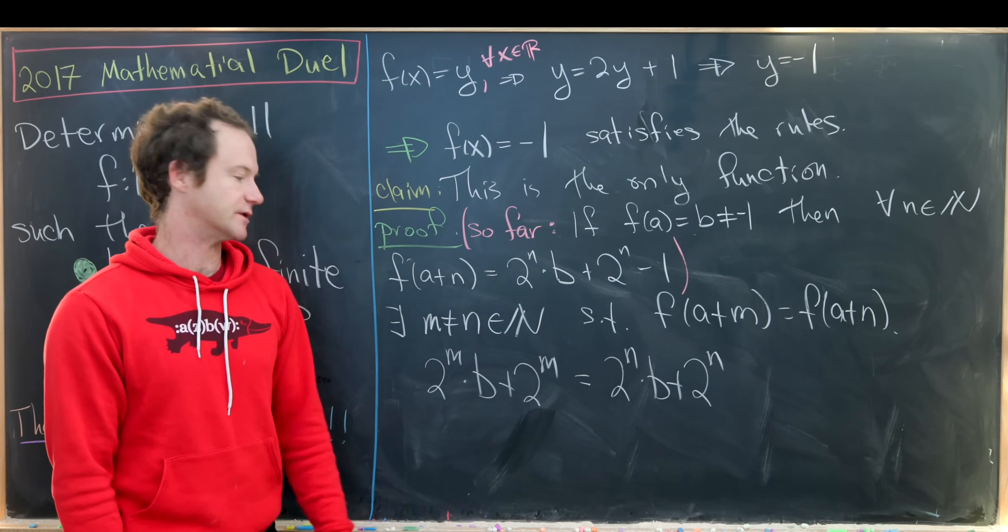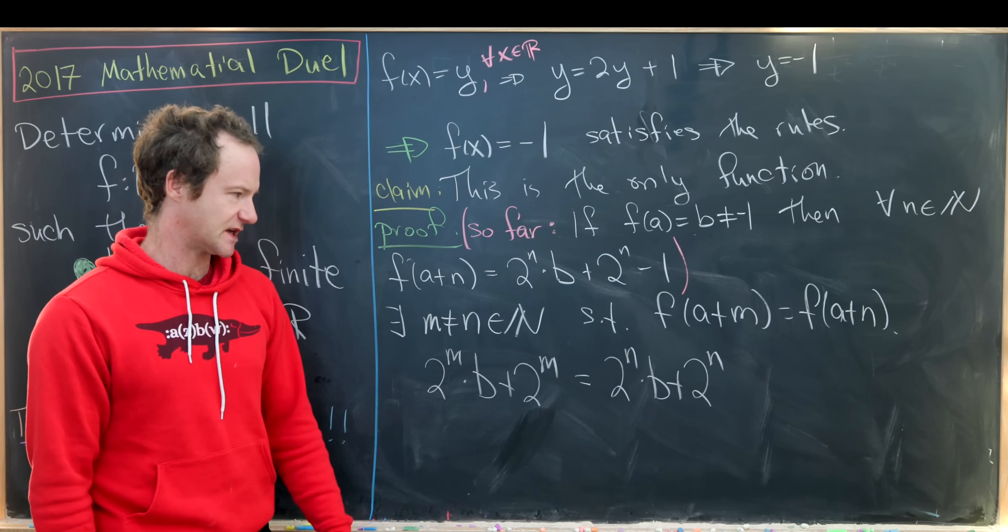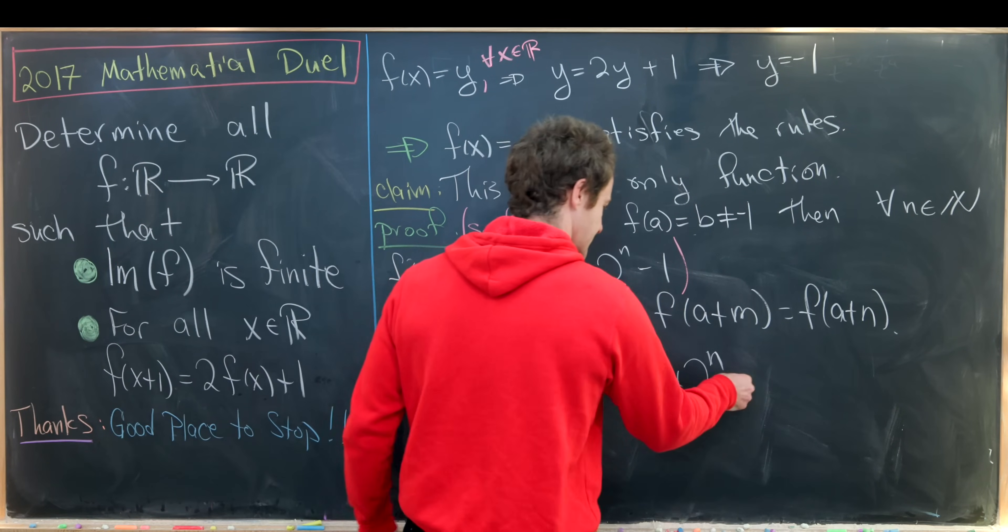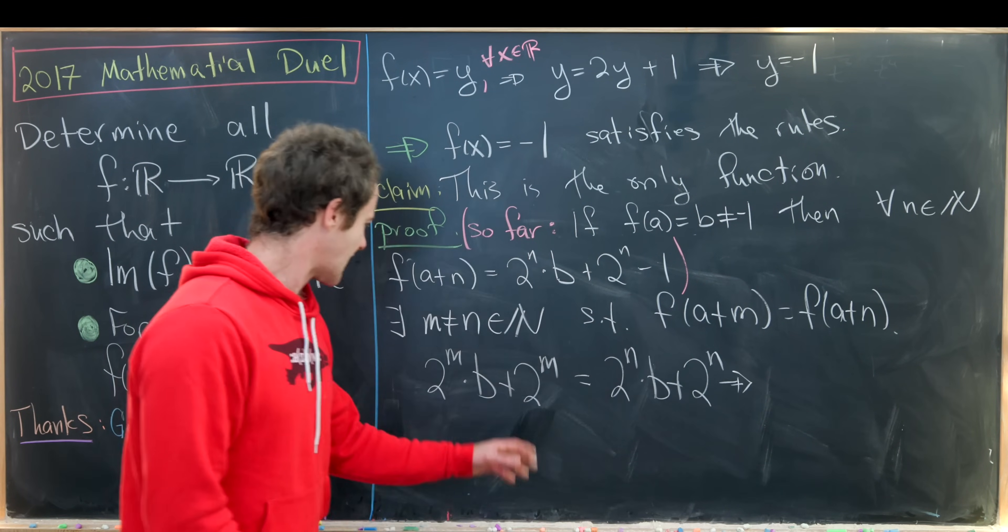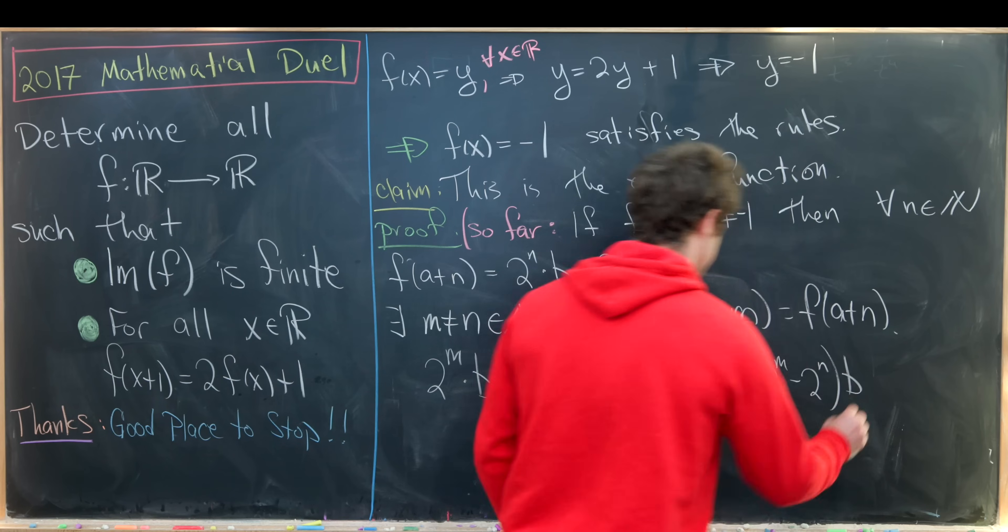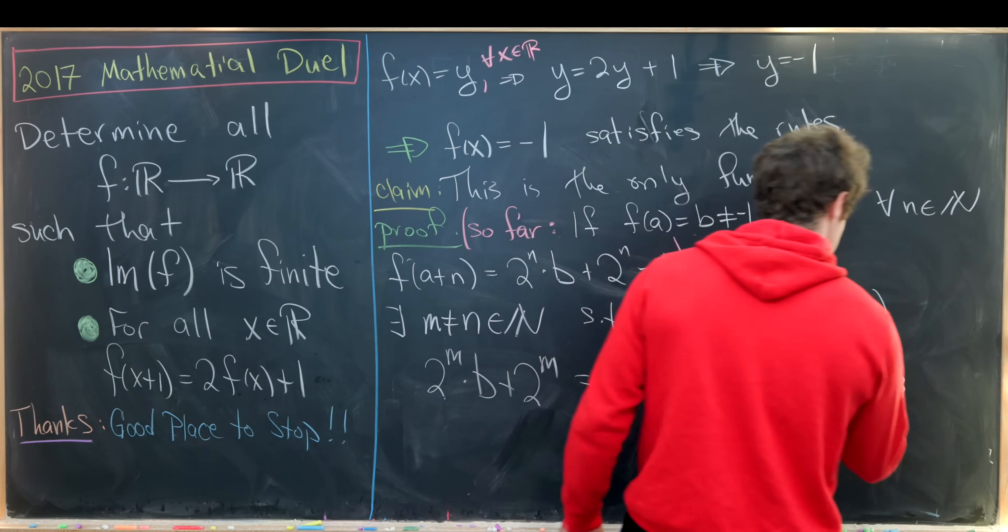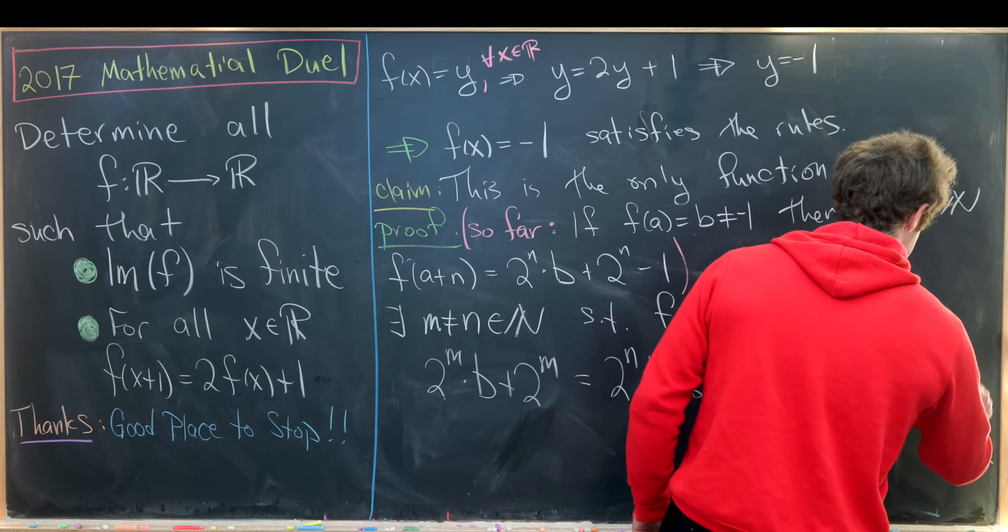equals 2^n times b plus 2^n. Obviously both of these have a minus 1, but I can just cancel those out. Okay, so now let's move all of the b's to one side of the equation and everything else to the other side of the equation. That'll leave us with something like 2^m minus 2^n times b, moving this over here, equals 2^n minus 2^m.